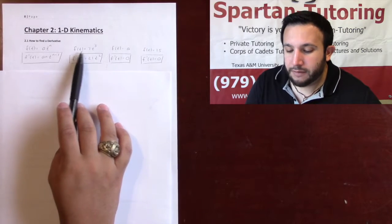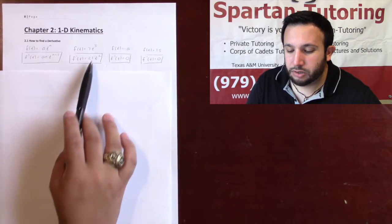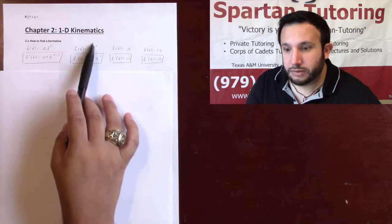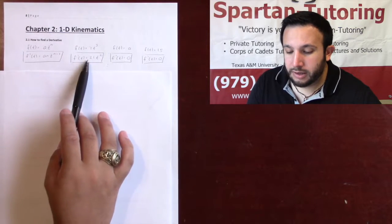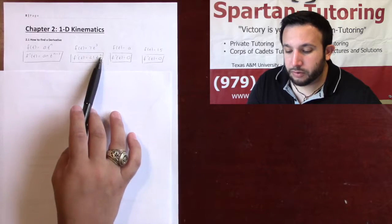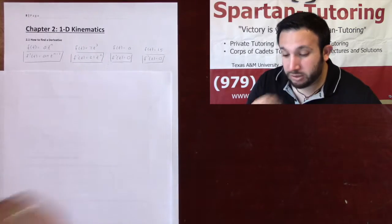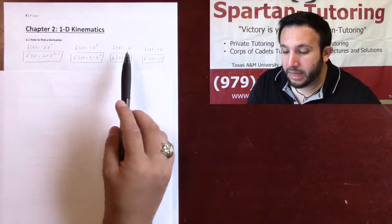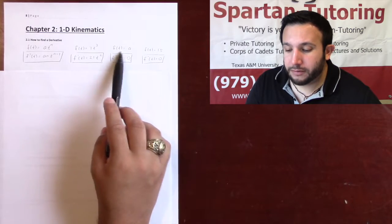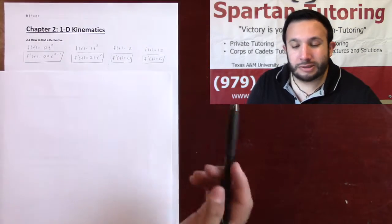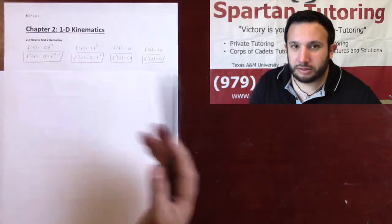So for example, if f of t is 7t cubed, all you're going to do to take the derivative is you take this 3, multiply it in front. 7 times 3, that's 21. You subtract one from the top, and so that's a 2. So hence, it's 21t squared. The derivative of any number, if f of t is a number, the derivative of any number is 0. For example, the derivative of 15 is just 0.